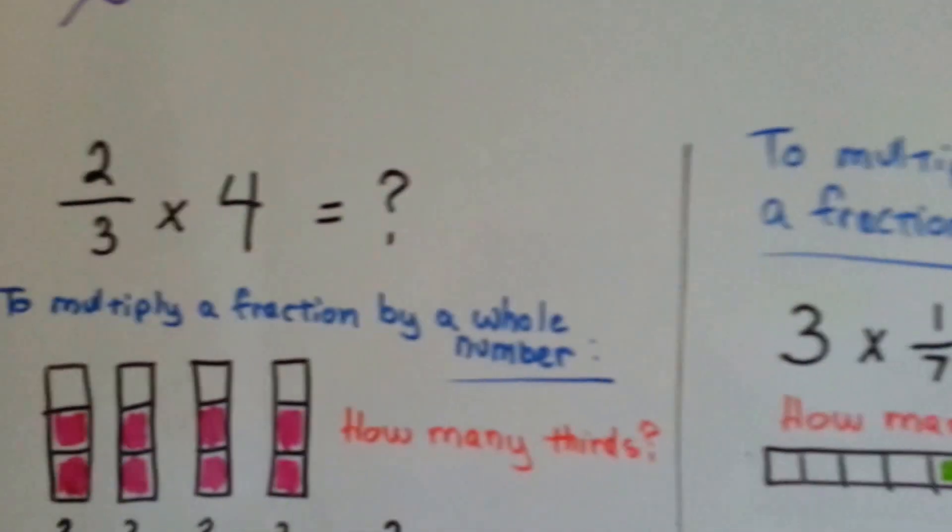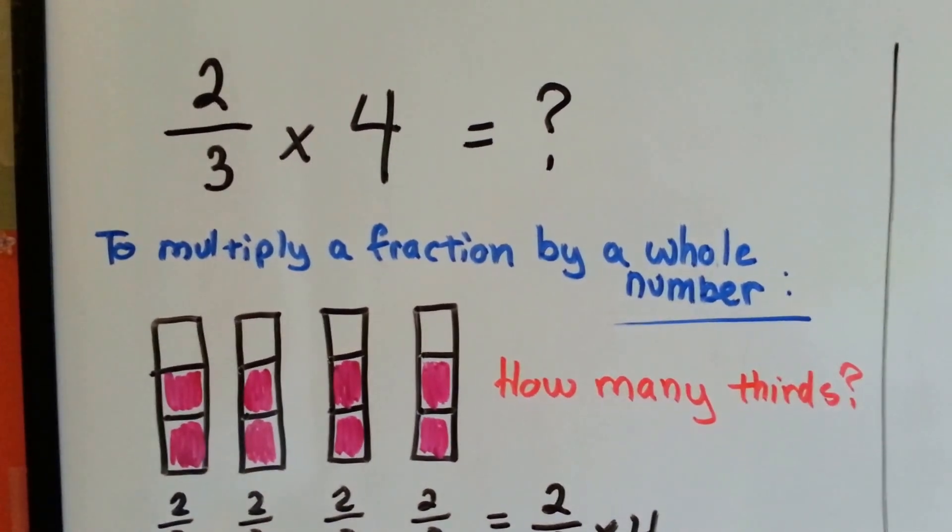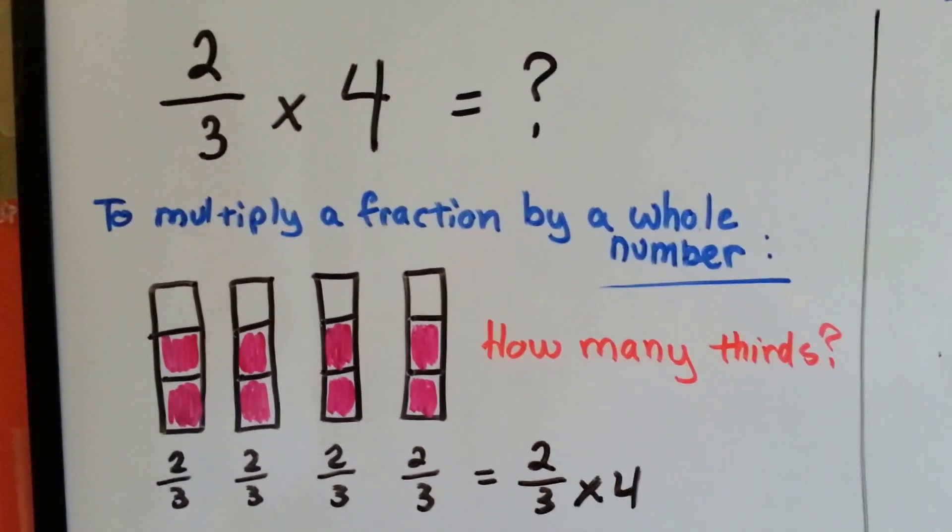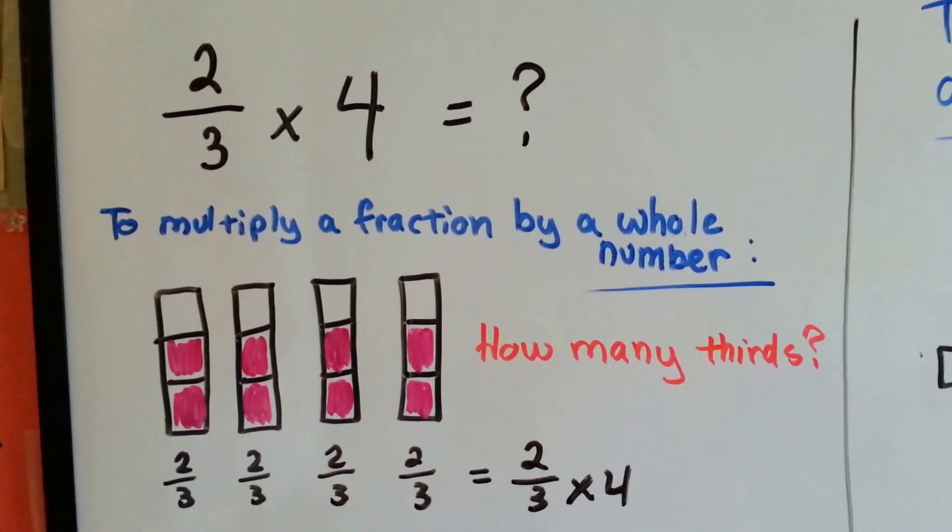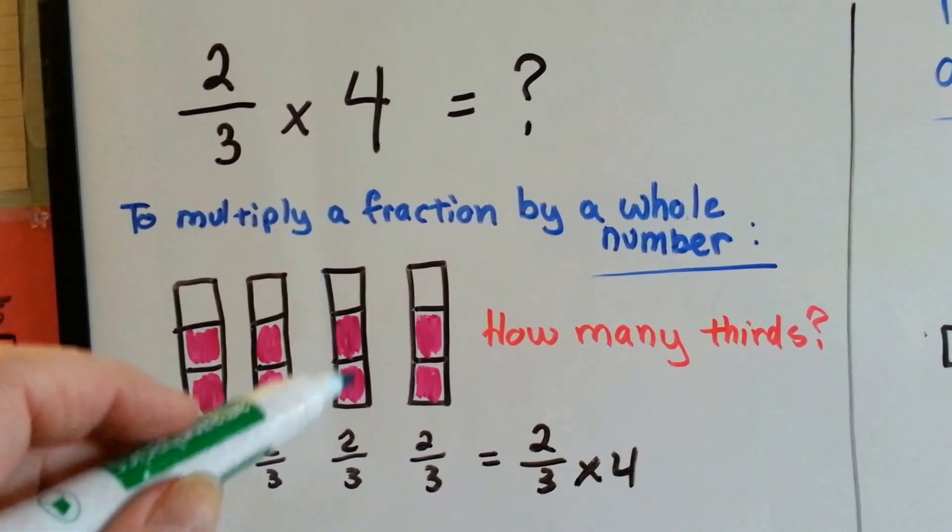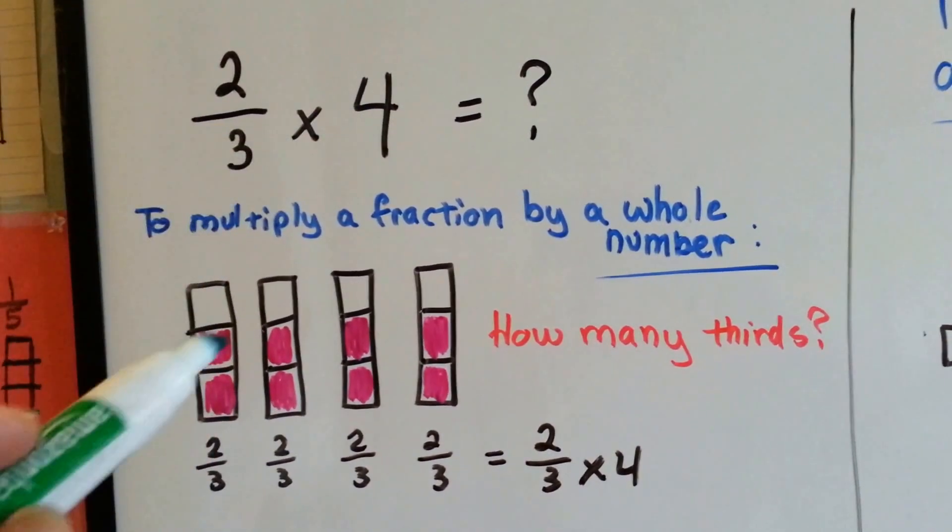Take a look at this one: two-thirds times four. This is to multiply a fraction by a whole number. We're asking ourselves, how many thirds? If we had two-thirds four times, which is what this is saying, we have two-thirds times four.